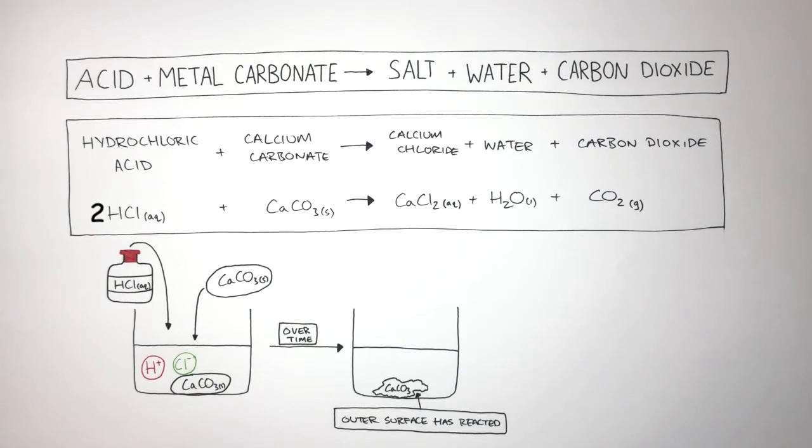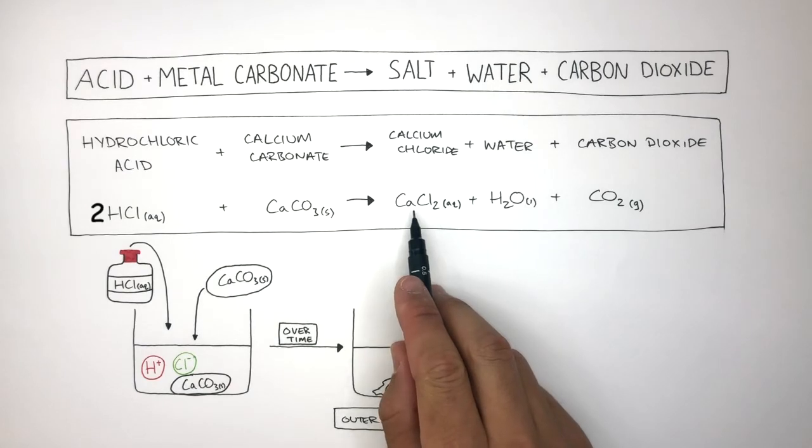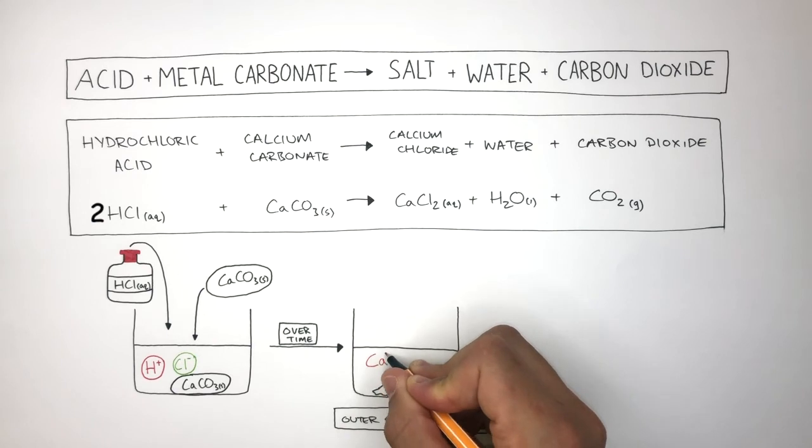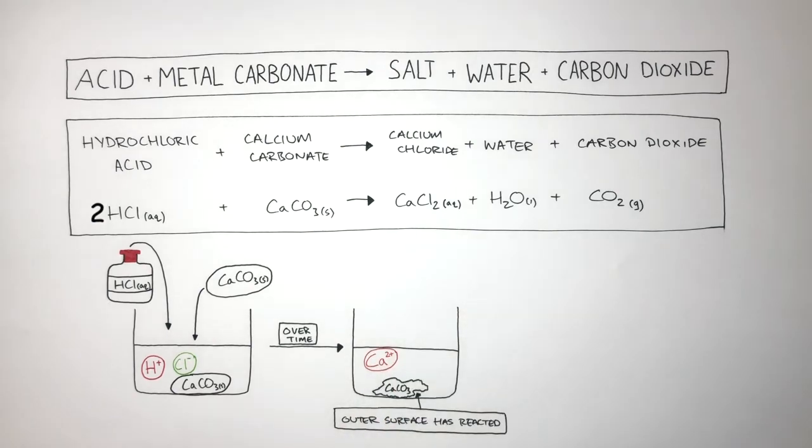We know from the equation a salt always forms when an acid reacts with a carbonate, and in this case it's calcium chloride. So in solution we have one calcium ion and two chloride ions dissolved.